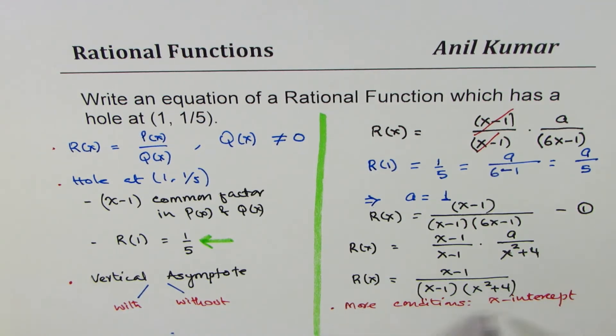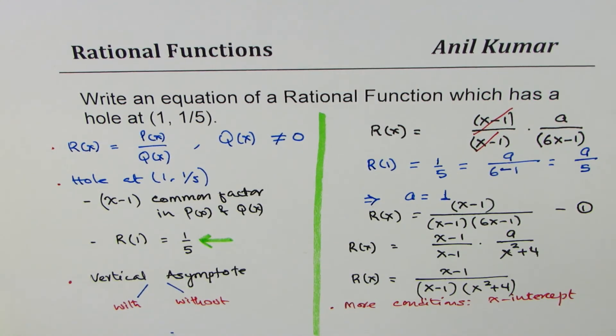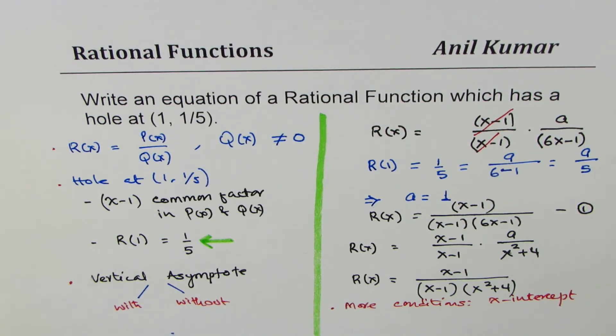So if I add more conditions, you will see that the approach which I have adopted here will help you incorporate such conditions also. That's the whole idea—think broadly. And that becomes now a general solution for providing rational function equations with given conditions. Conditions could be hole at a given point, vertical asymptote, x-intercepts, y-intercepts, and so on.